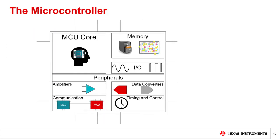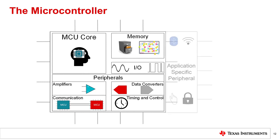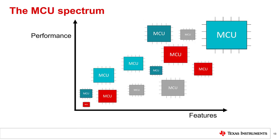Everything discussed so far are components you will find on most MCUs, also known as general-purpose MCUs. You may also encounter MCUs that are not generic and are designed to be used in specific applications. These could be MCUs with a certain mix of peripherals needed for that specific application. Certain MCUs have application-specific peripherals integrated to better meet the needs of said application, such as various wireless communication protocols, human interfaces, advanced security, and many more.